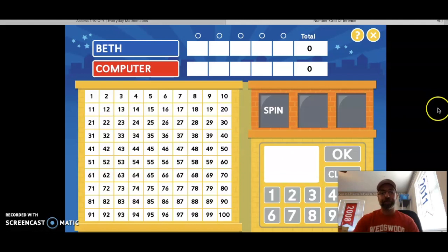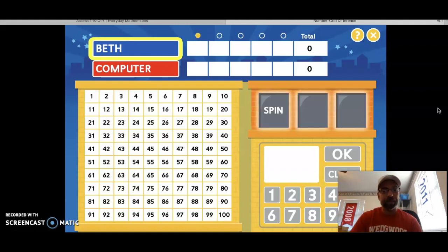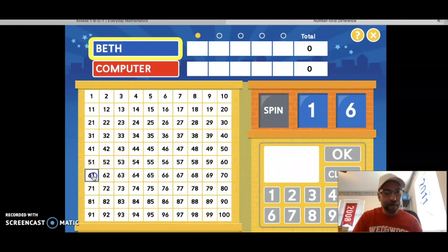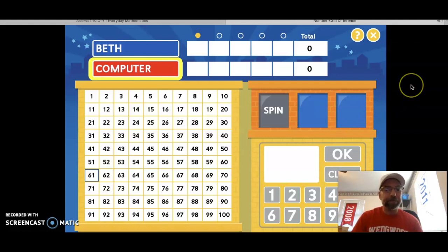And the directions are going to start to appear. Ready to play the Number Grid Difference game? The lower score wins. Click spin to get the digits for your number. Click the number you want to make. Now, the important thing is the lower difference wins. So I want my numbers that I make to be close together. Let me make 61. Now, it's the computer's turn. Not much of a choice.